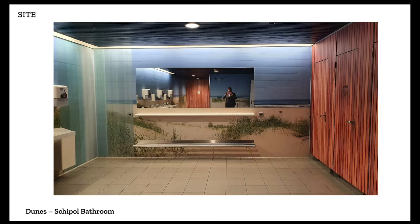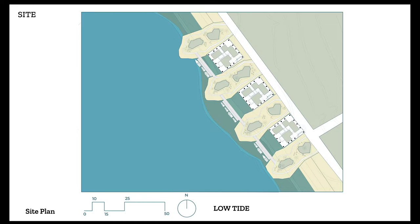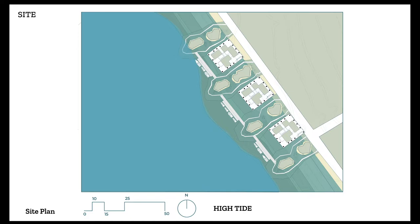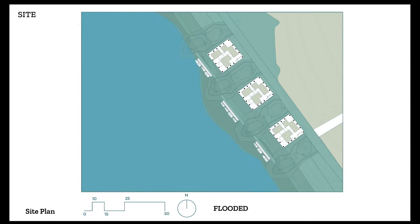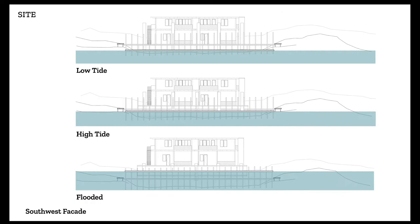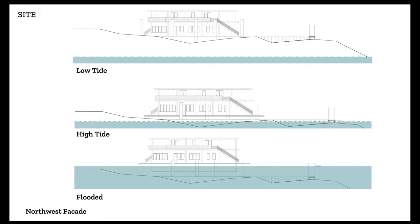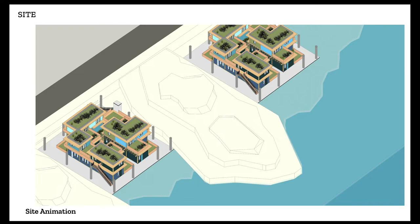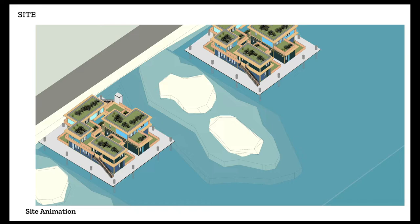This is the site at low tide. This is it at high tide — mostly flooded but still with access to your boat. And this is it completely flooded — there is a secondary dock that floats with the mooring poles of the first dock so that you can ideally always access your boat even in the worst case scenario. This is how it looks in the southwest facade and the northwest facade in these different conditions, and there is a little animation to show how that floating works.